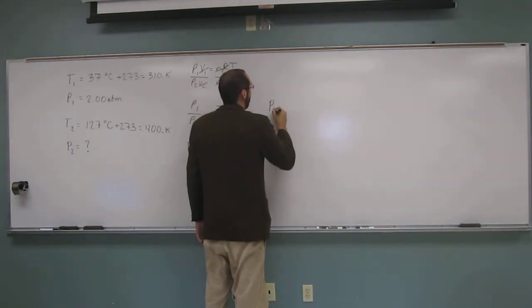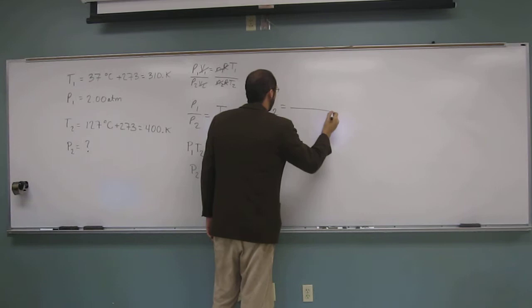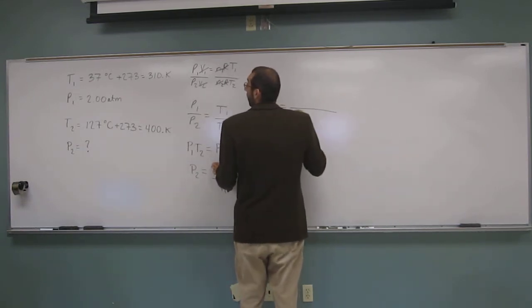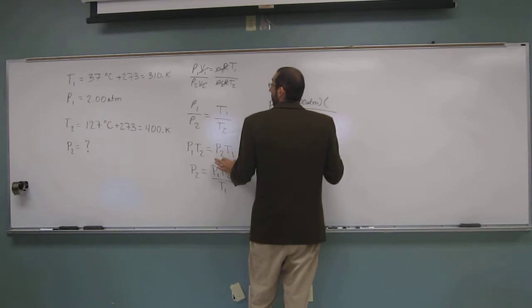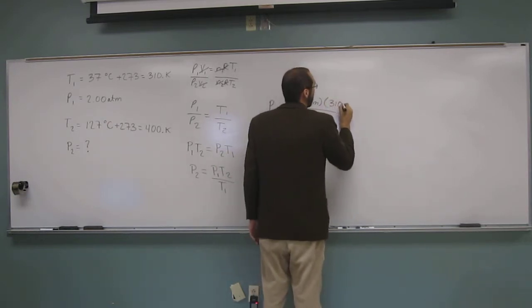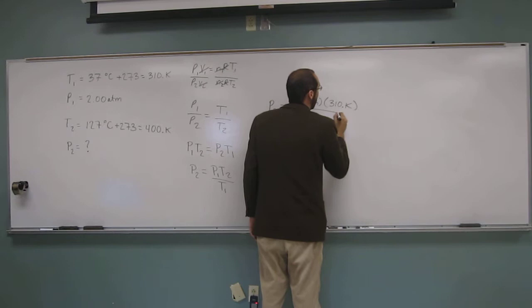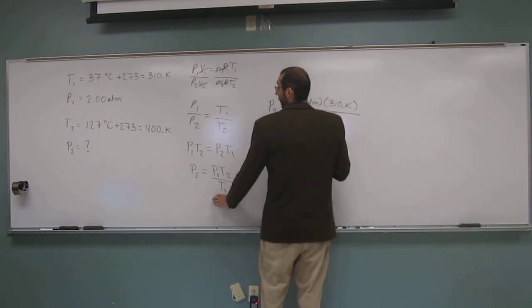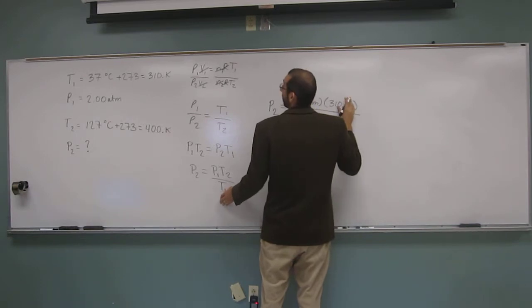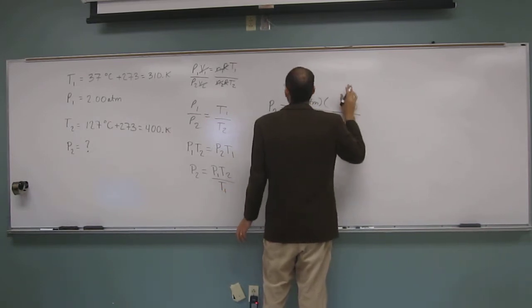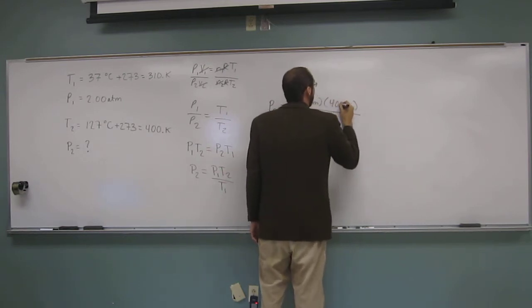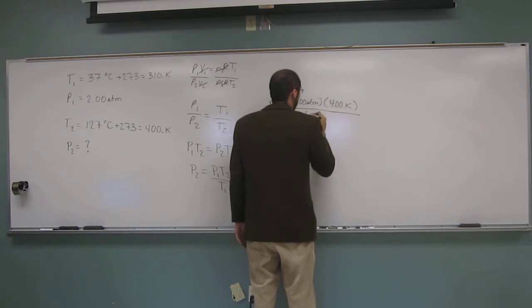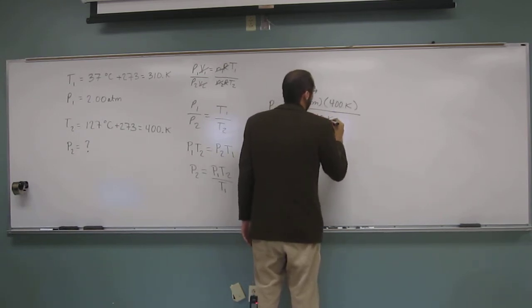So P2, so P1 is 2.00 ATM, T1 is 310 Kelvin. So we'll do it. So P1 divided by T1. So P2 is going to be T2, 400 Kelvin, divided by T1, 310 Kelvin.